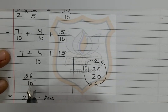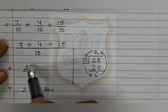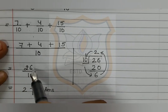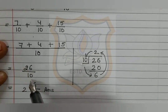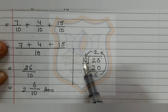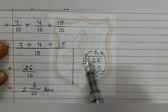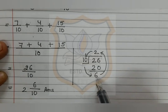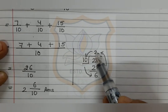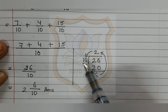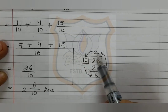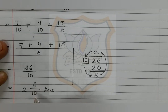We convert 26 upon 10 from an improper fraction to a mixed fraction. Dividing 26 by 10: 10 twos are 20; 26 minus 20 equals 6. The quotient is 2, remainder is 6, and divisor is 10. These numbers move anticlockwise, giving the mixed fraction 2 and 6 upon 10. This is the answer for part 5.